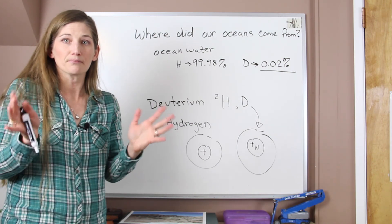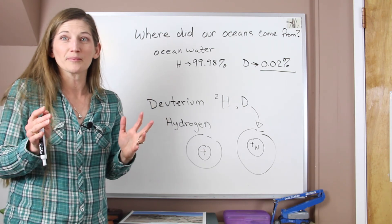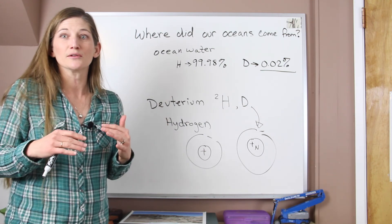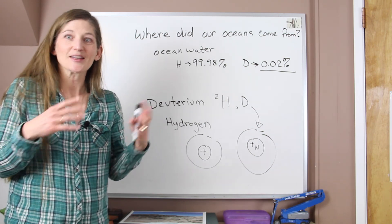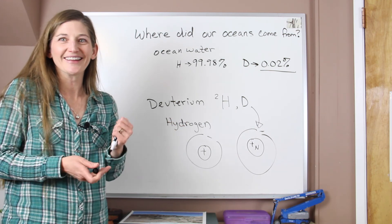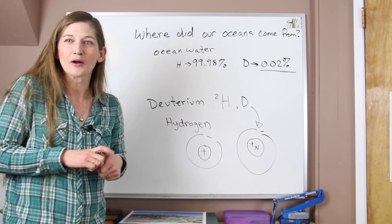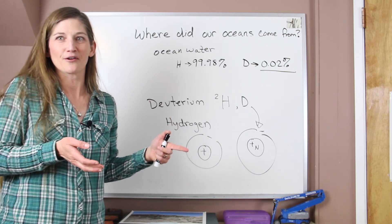So whichever camp you might lean towards, there is more research to be done looking at bodies within our solar system to understand where water could be coming from, the ratios of that deuterium within the water, to try to understand where our oceans came from. So that's just one way that our solar system and researching our solar system contributes to our understanding of our oceans on planet Earth.